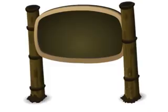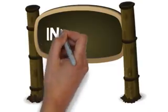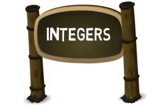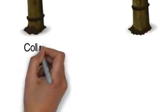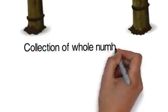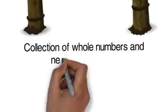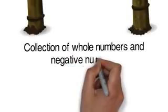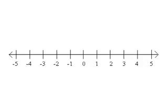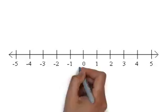Hello, let's talk about integers. The collection of whole numbers and negative numbers are called integers. You can write integers on a number line.